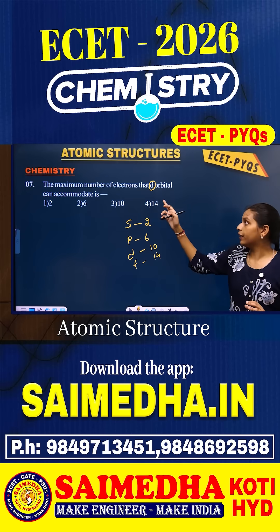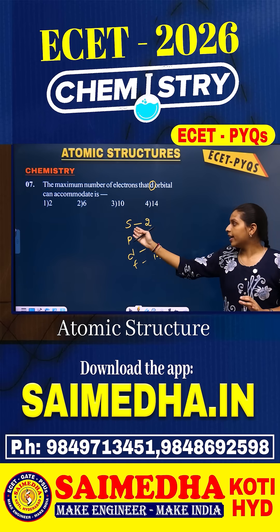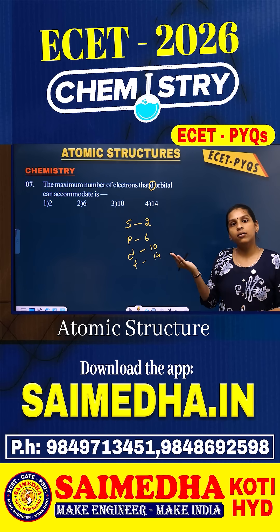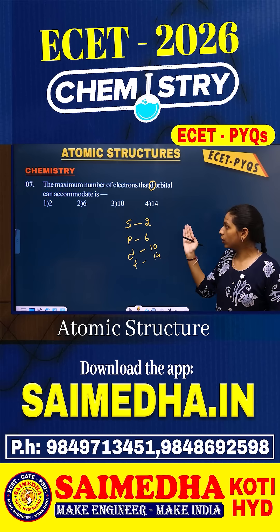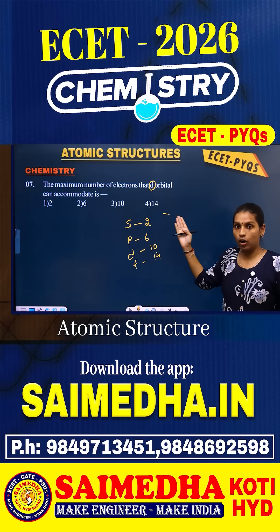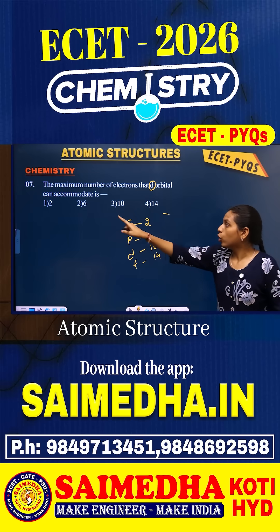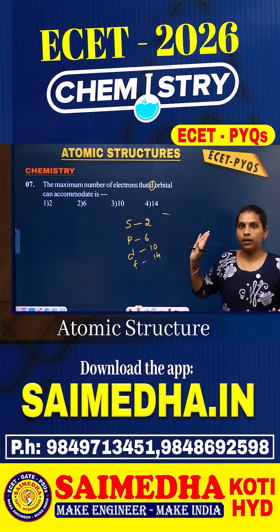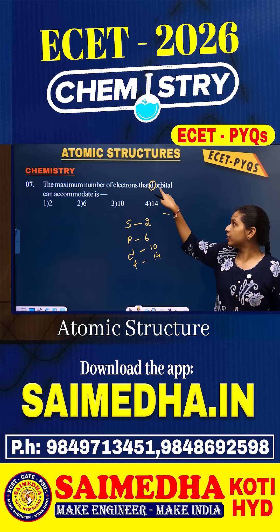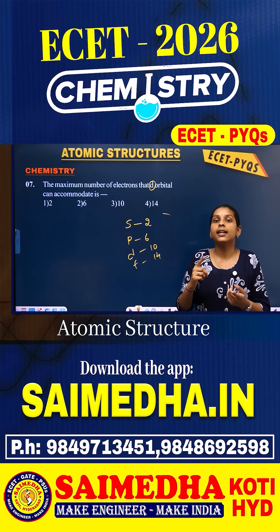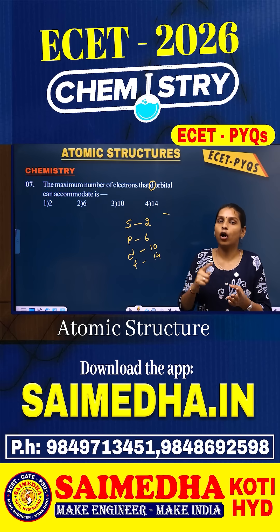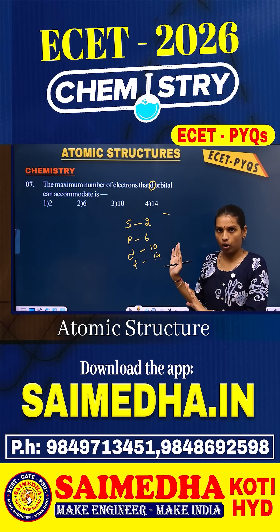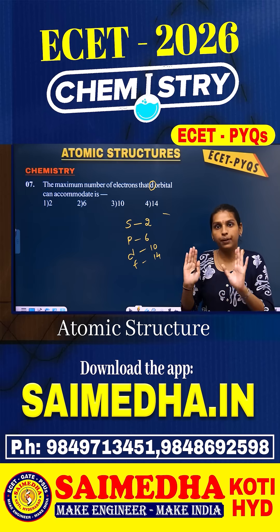If you misread the orbital — reading s, p, or f instead of d — you are going to choose the wrong option, because all those values like 2, 6, and 14 are present in the options. Be careful — that's the reason.